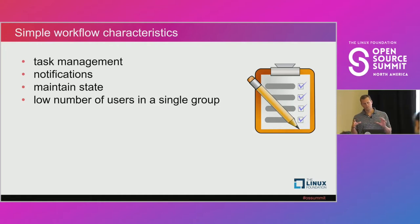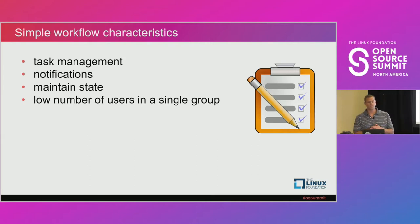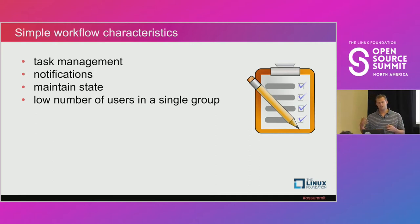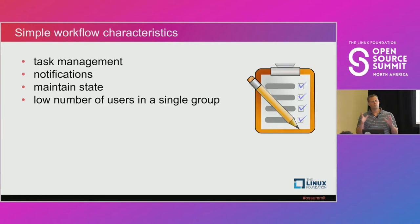Now that we know what workflow is, let's separate it into two different buckets: simple workflow and complex workflow. Starting with simple workflow, at its core, task management or a to-do list is one of the common characteristics. Users need to know what tasks they need to do and maintain state — what's in progress, what's not started, what's done. Then notify either them or others when certain phases change, through a text message or email. Simple workflow normally involves maybe only one team or division.